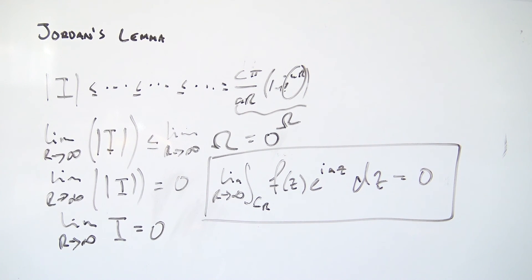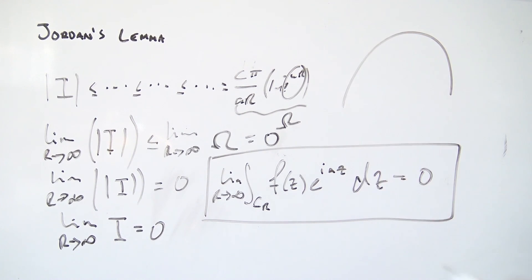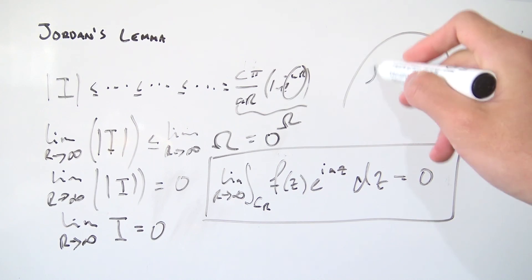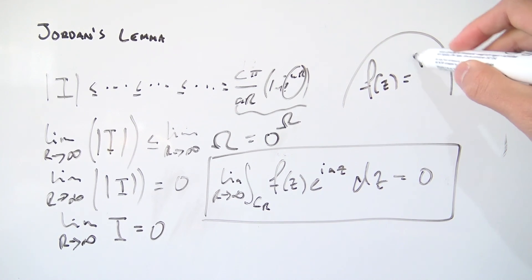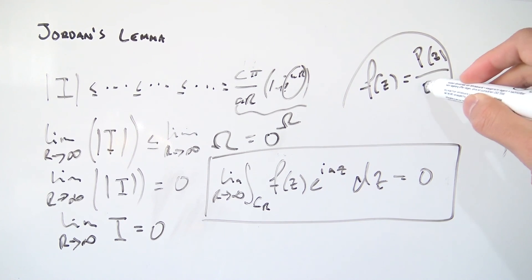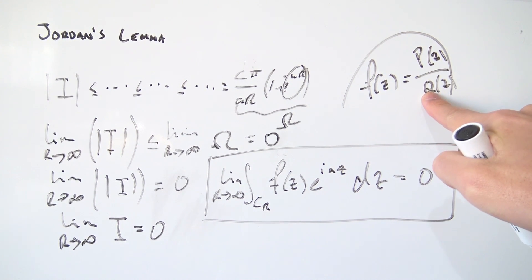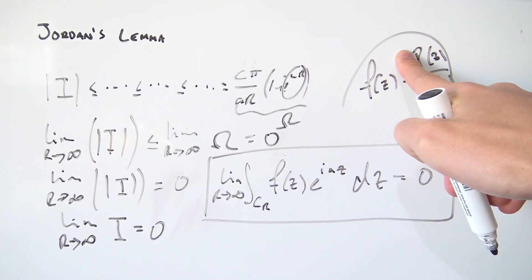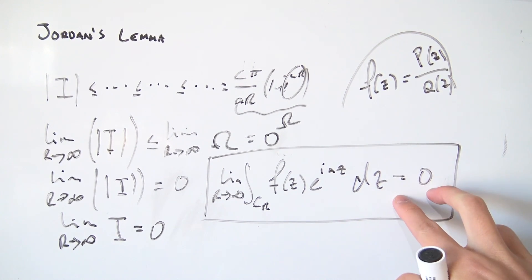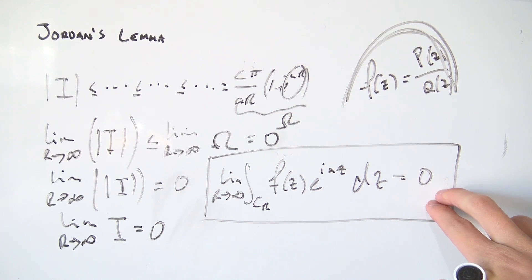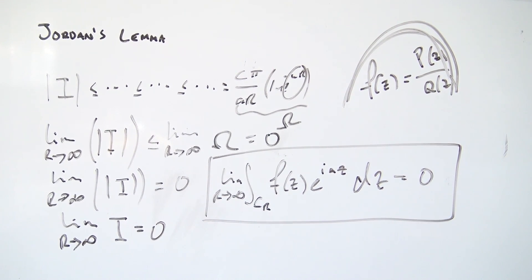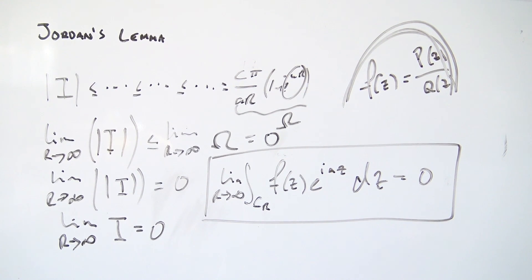So there you go — that is the proof of Jordan's lemma. Whenever you're evaluating contour integrals that include some kind of semicircular arc and you know that f(z) = p(z)/q(z) where the degree of q is greater than the degree of p, you can just use Jordan's lemma to say that the integral over the arc goes to zero as r → ∞. Hope you guys enjoyed this video, and I'll see everyone next time.